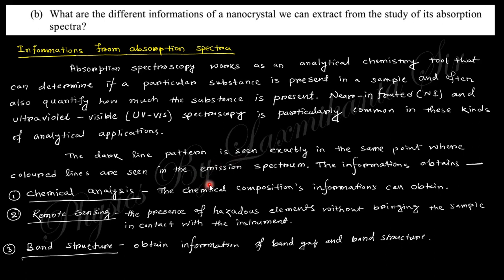You can analyze chemical compositions - which components exist within this material. For remote sensing, without bringing the sample, you can detect where the samples are hazardous or not. Also, you can get information about the band structure, optical band structure, electrical band structure information also observed from the absorption spectra.